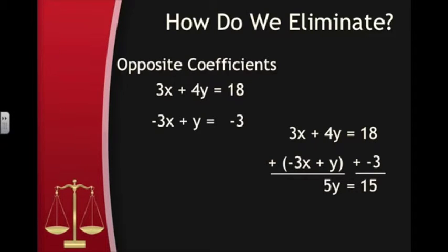Now we have 5y equals 15, an equation with only one variable, so we can divide both sides by 5 to get y equals 3. Now that we know the y coordinate of our solution, we need to substitute it into one of the equations to find the value of x.